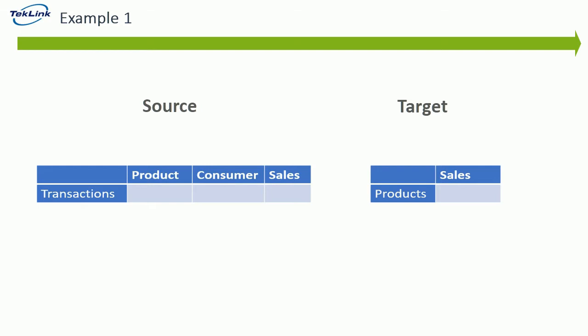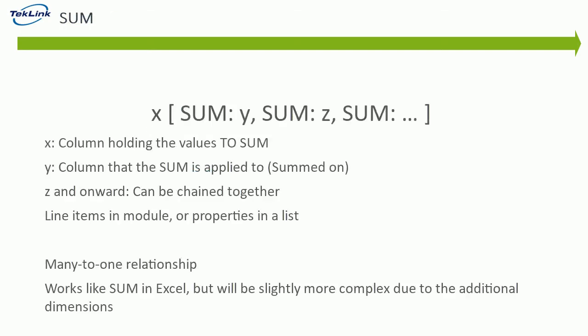You can also think of it this way: if we want to display our sales by products rather than by transactions, we are going to have to sum multiple transactions together. This is the syntax for the sum function, where x is the column holding the values to be summed, y is the values that the sum is applied to or summed on, and z and so on are there to increase dimensionality if you choose to do so. This formula works for line items in a module or properties on a list. You can think of a sum function as a many-to-one relationship and it's very similar to the sum function in Excel.